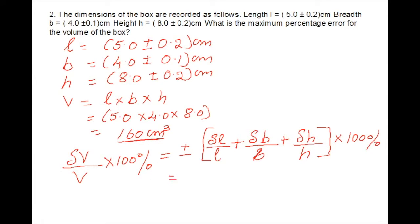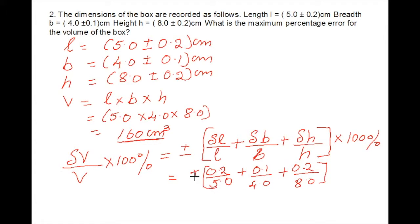Substituting values: 0.2 divided by 5.0, plus 0.1 divided by 4.0, plus 0.2 divided by 8.0, all times 100%. This gives a percentage uncertainty of 9%. So there is a 9% uncertainty in the calculated volume of 160 cm³.